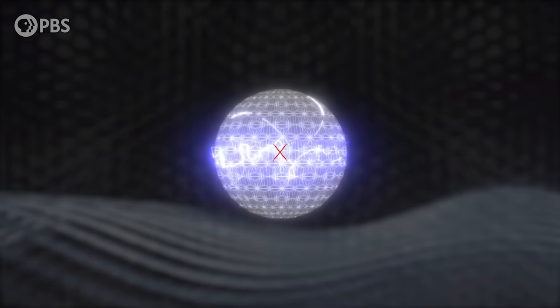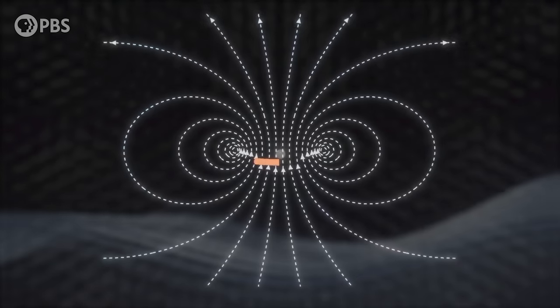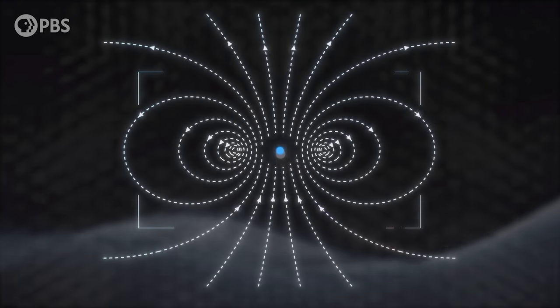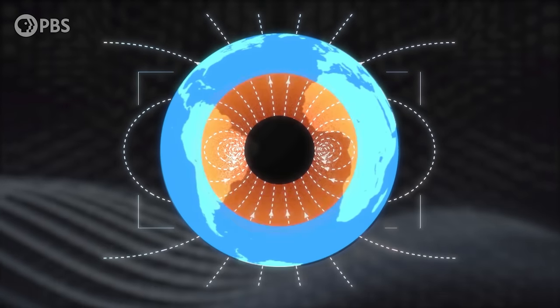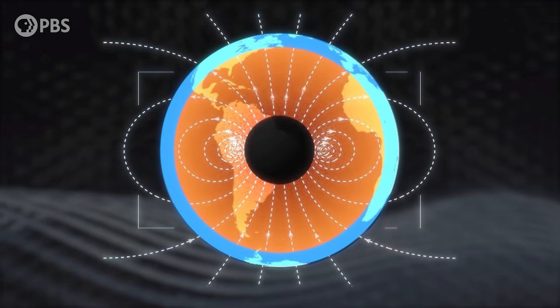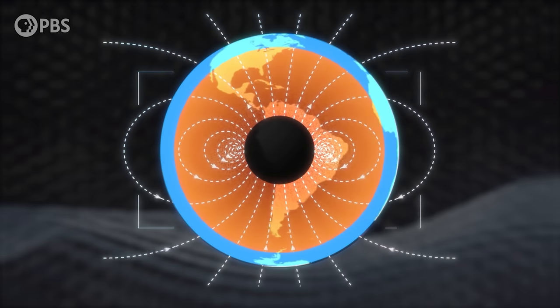Every particle with electric charge also has quantum spin. This isn't the same thing as simple rotation, but particles with quantum spin do generate a magnetic field. Same as if you send an electric charge around a looped wire, or have electrical currents in Earth's spinning core.